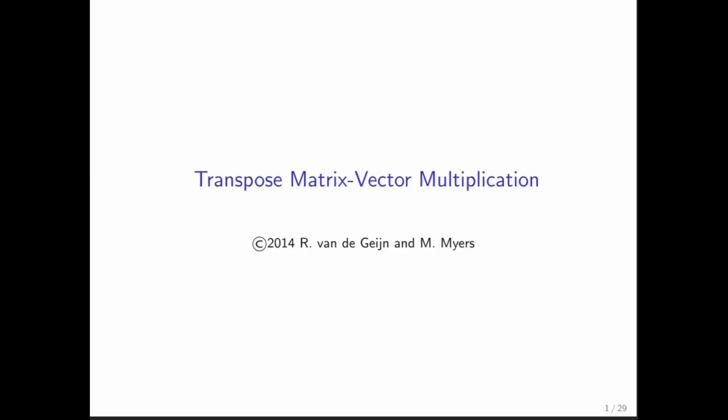We're going to talk about how to do a matrix vector multiplication with a transposed matrix. But we're going to be very concerned about not explicitly transposing that matrix, because then we would have to make a copy of it.